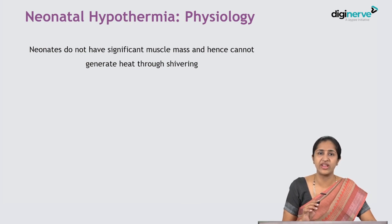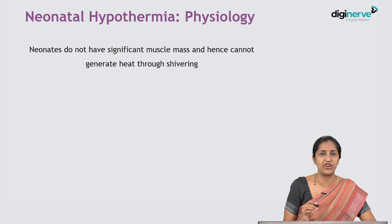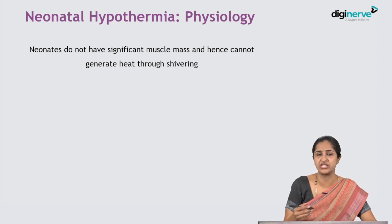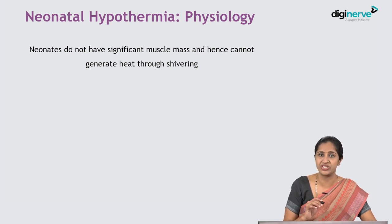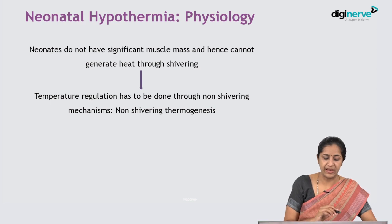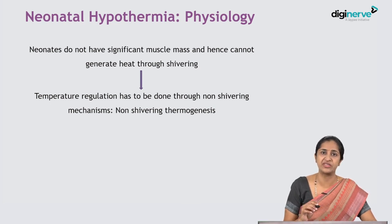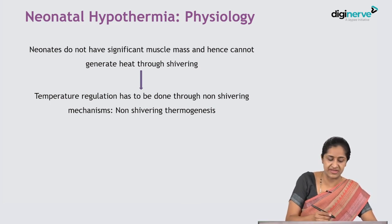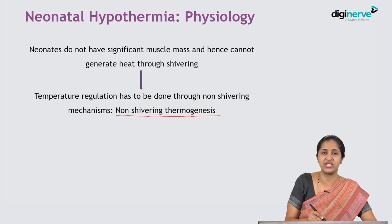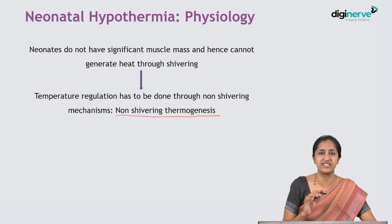Neonates do not have significant muscle mass. Hence, when they feel cold, they cannot shiver and produce heat through active muscle contraction to increase body temperature. Temperature regulation therefore has to be done through non-shivering mechanisms — this is what is called non-shivering thermogenesis, which is very clearly described with respect to newborns.